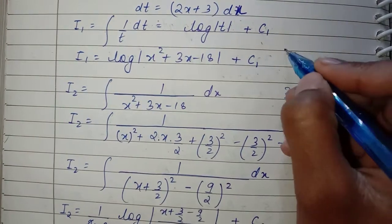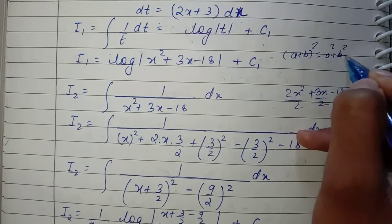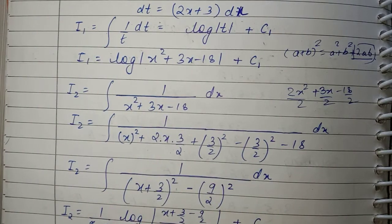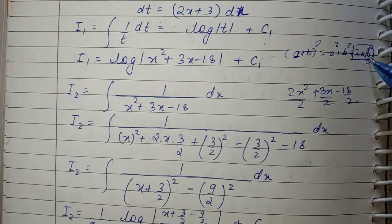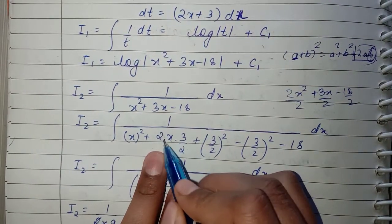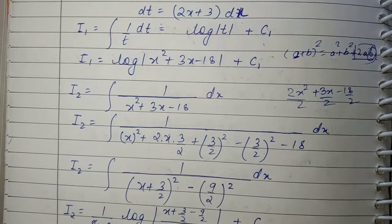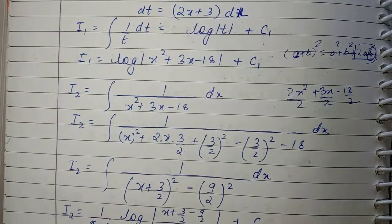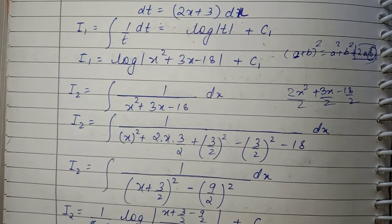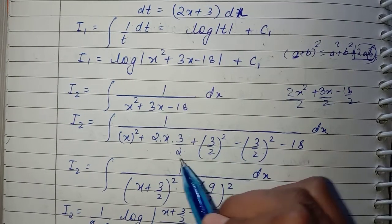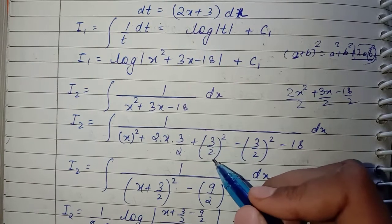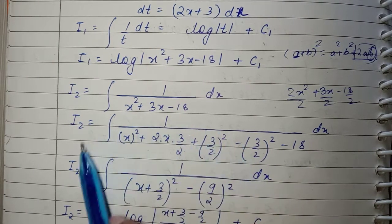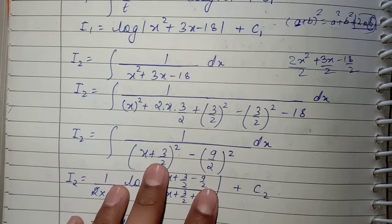Since we have x², we take a = x. To match the 3x term (which is 2ab), b must be 3/2. We add and subtract (3/2)² = 9/4. This gives (x + 3/2)² − 9/4 − 18, which simplifies to (x + 3/2)² − 81/4, which equals (x + 3/2)² − (9/2)².